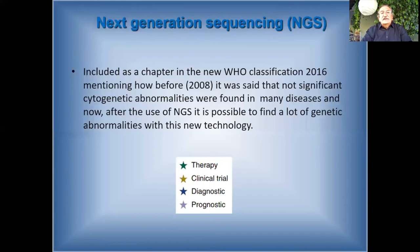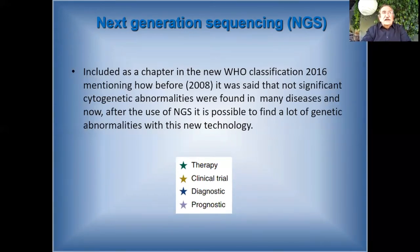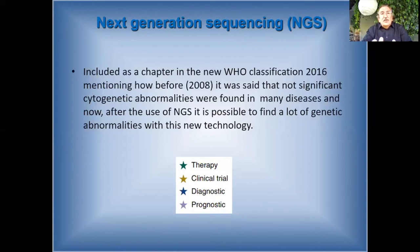Regarding next generation sequencing, according to the WHO there is a chapter stating that without using this technology many cytogenetic abnormalities were not found with classical techniques. We need to do this today - if we don't, we can even commit malpractice. For example, it is no longer acceptable to say only 'chronic lymphocytic leukemia.' You must specify whether it is CLL with deletion 13 (good prognosis), deletion 11 or 17 (bad prognosis), or trisomy of chromosome 12. You cannot diagnose CLL without this because treatment and prognosis are absolutely different.